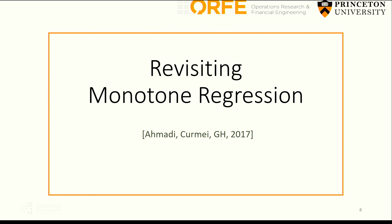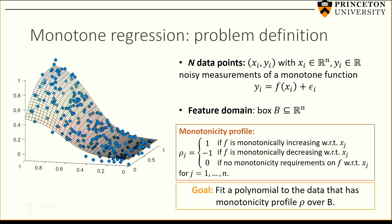Now, back to my two applications, starting with monotone regression. The setting: we have n data points xi (our feature vector) and yi (our response). I assume there is an underlying function f that generates these points, so yi is a noisy measurement of f at xi, with added noise epsilon_i. I further assume that the feature vectors xi belong to a box B included in R^n.